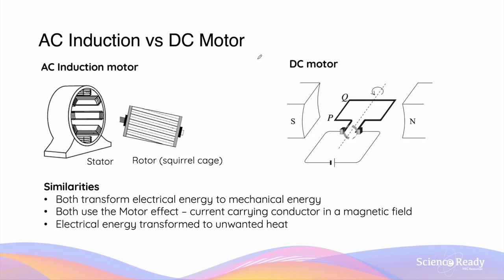Let's compare an AC induction motor with a conventional DC motor. In terms of similarities, both motors transform electrical energy to mechanical energy, which is the main form of energy transformation in motors. Both types of motors utilise the motor effect — when you have a current-carrying conductor inside a magnetic field, a force is produced on the conductor. In both motors, electrical energy is partially transformed into unwanted heat, which lowers the efficiency of the motor.